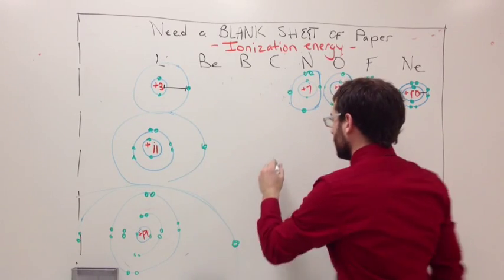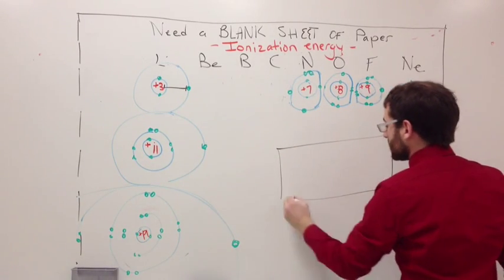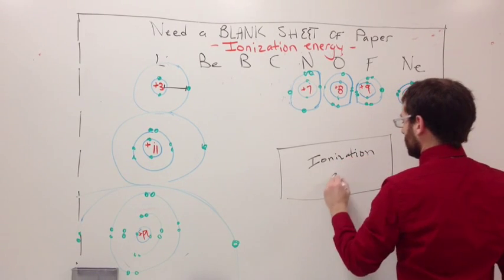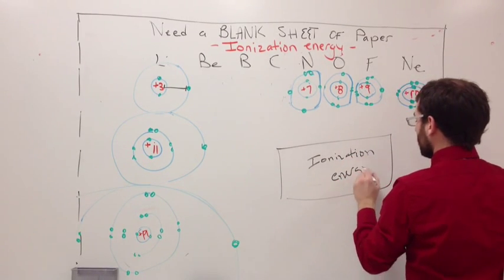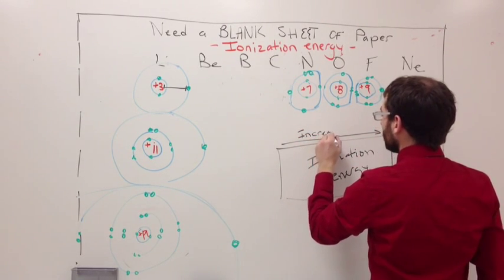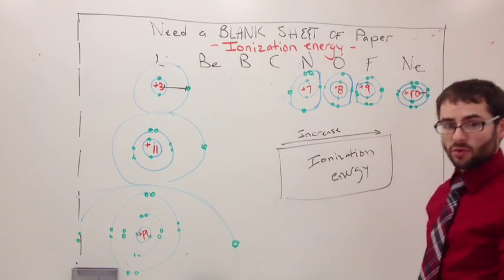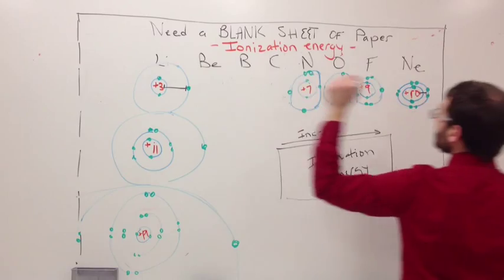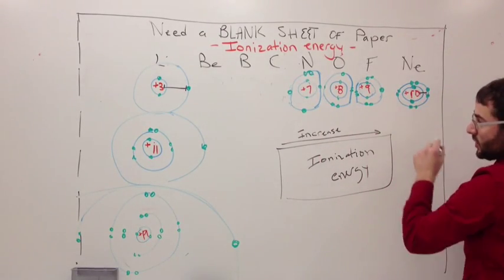That's why the trend is as follows. Ionization energy, if we're moving from left to right, it increases. Remember, this is the amount of energy to remove an electron, so that's why it increases. It takes less energy to pull this guy off. It takes way more energy to pull this one off.